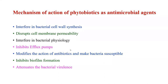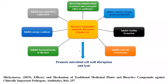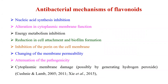Phytochemicals produce antimicrobial activity through several mechanisms: interfering with bacterial cell wall synthesis, disrupting cell membrane permeability, interfering with bacterial physiology, and inhibiting efflux pumps. Among all phytoconstituents, flavonoids, polyphenolic compounds, essential oils, and alkaloids possess potent antibacterial properties. The antibacterial mechanisms of flavonoids include: acting as nucleic acid synthesis inhibitors, altering cytoplasmic membrane function, altering energy metabolism, reducing cell attachment and biofilm formation, inhibiting porins on the cell membrane, changing membrane permeability, and causing cytoplasmic membrane damage mainly through generation of hydrogen peroxide radicals.